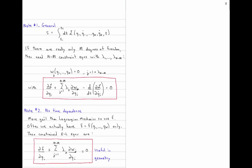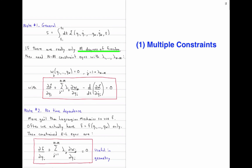Let's first take up the idea of multiple constraints. Here I've written down the action integral in terms of the Lagrangian L, with variables Q1 through QN. Let's say there are really only M degrees of freedom, where M is less than N. That means I need to introduce constraint equations — specifically N minus M of them. Each constraint W_j is a function of the positions and is equal to zero. So I have N minus M constraint equations and N Lagrange equations.